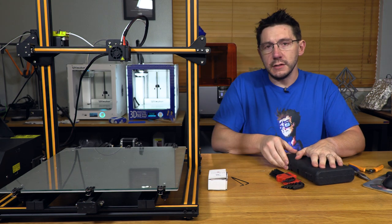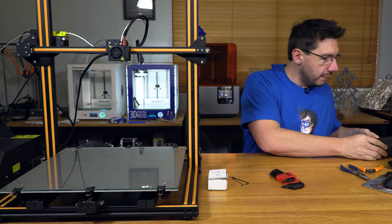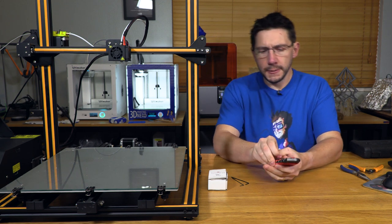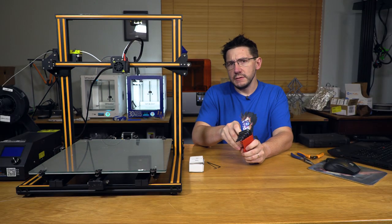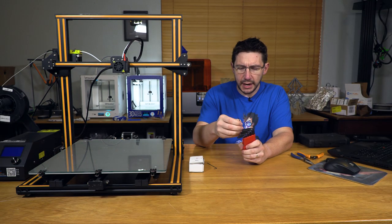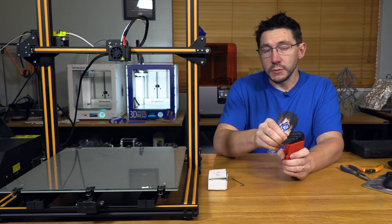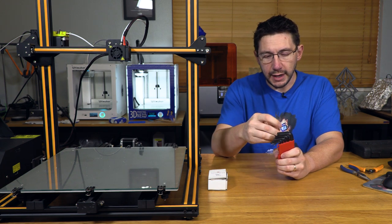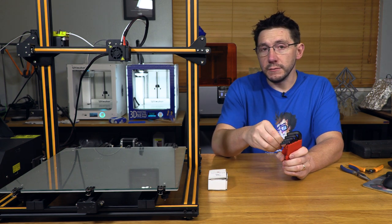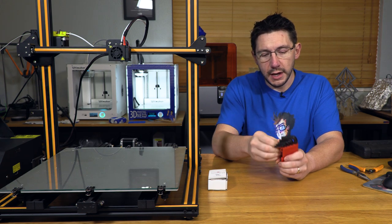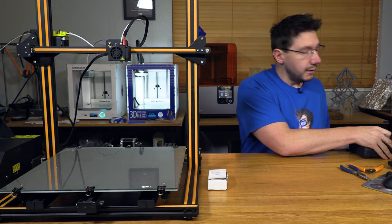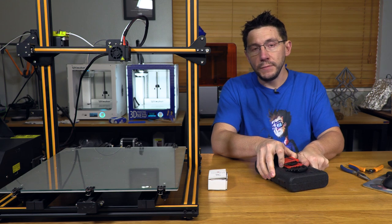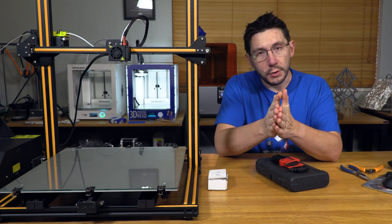I hope that was a valuable little tutorial on how to install the Micro-Swiss hotend all-metal upgrade for CR10 family of printers. Let me know if you have any questions down in the comments, and I'll do my best to answer them. Again, a big thanks to Micro-Swiss for sending this over. I think that their product line is of good quality. I've used it for many years, and I don't think you'd be disappointed if you were to acquire this as well. You can find a link to it down in the description.